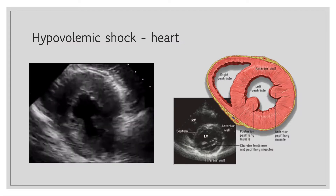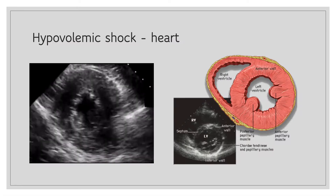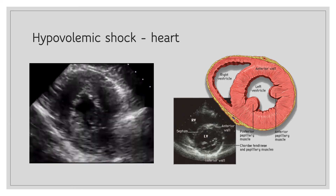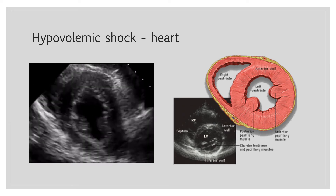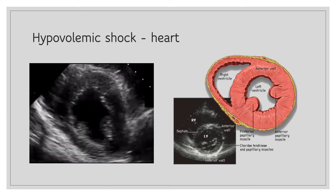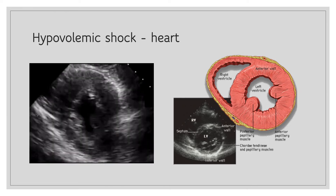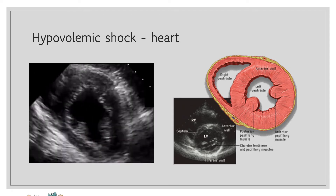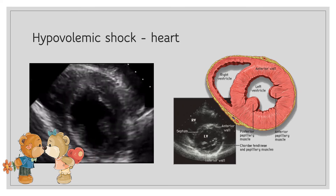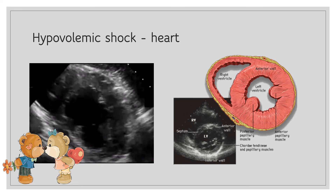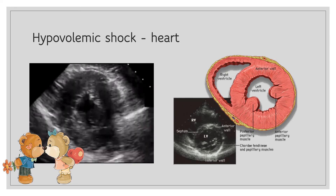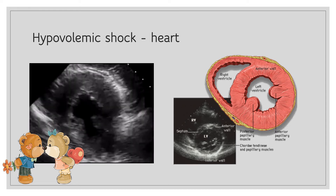In hypovolemic shock, the heart tries to pump harder to compensate for the loss of circulating volume. For example, in this parasternal short axis view obtained from a patient with acute blood loss, you can note how hyperdynamic the heart is. The papillary muscles are coming so close as if they are kissing each other — that's why the expression 'kissing papillary muscles' is used to indicate a hyperdynamic heart.